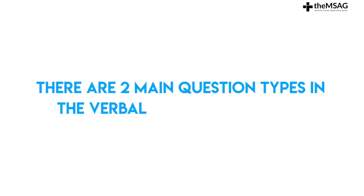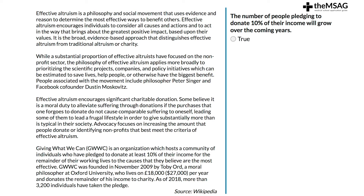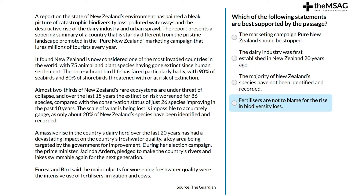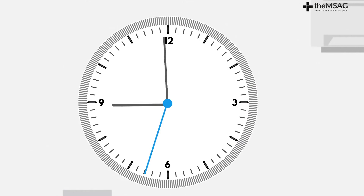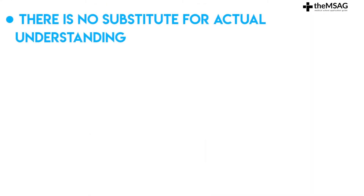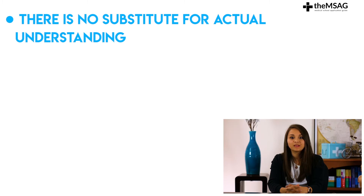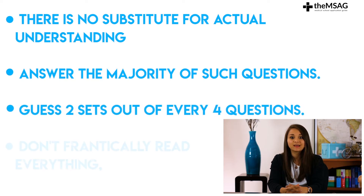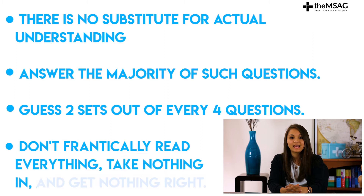There are two main question types in the verbal reasoning section. For the verbal reasoning subtest you have 21 minutes to answer 44 questions. You will be given a passage of text of between 200 and 500 words — they are usually around 300 words long — and then asked four questions based on that text. Our message for the four-option or inference questions is that there is no substitute for actual understanding. Skimming is advised by some, but we feel it is better to thoroughly answer the majority of such questions and get two right out of every four than to frantically read everything, take nothing in, and get nothing right.